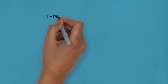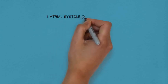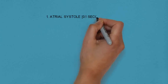Atrial systole lasts about 0.1 seconds. Both atria contract and force blood into the ventricles. That's the first phase of cardiac cycle.